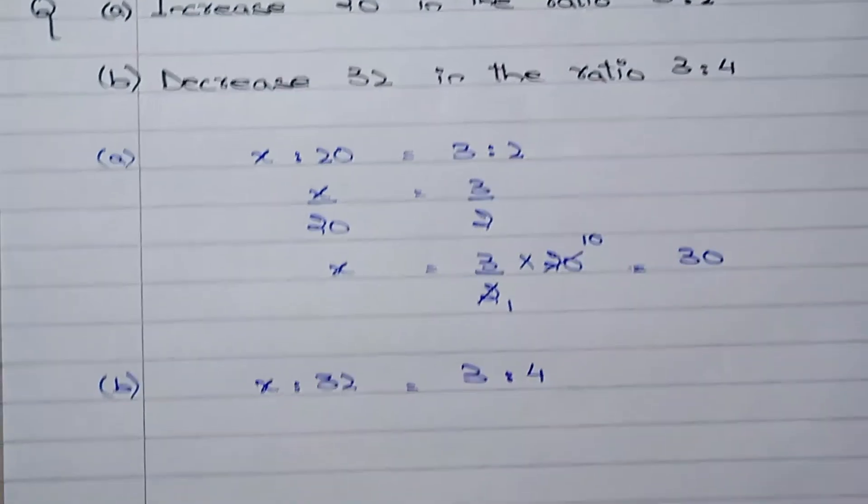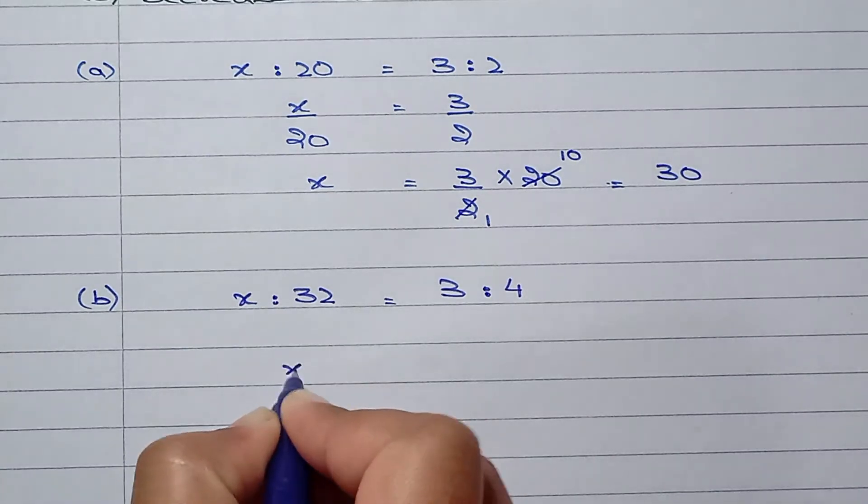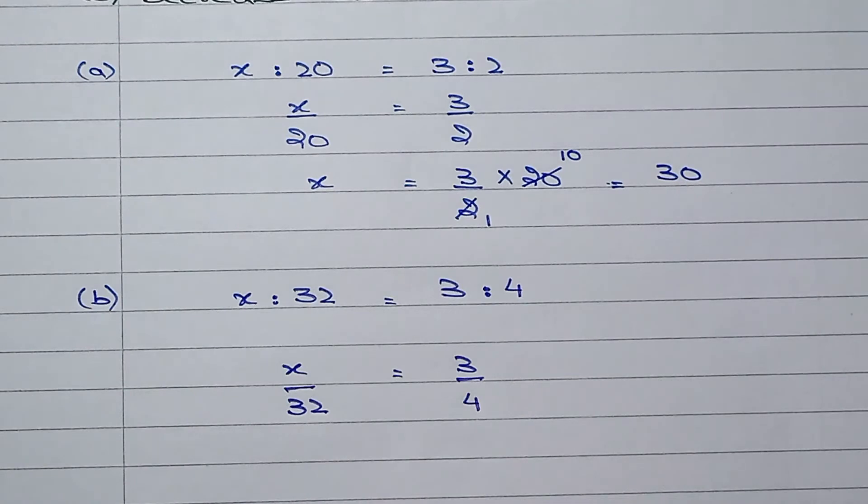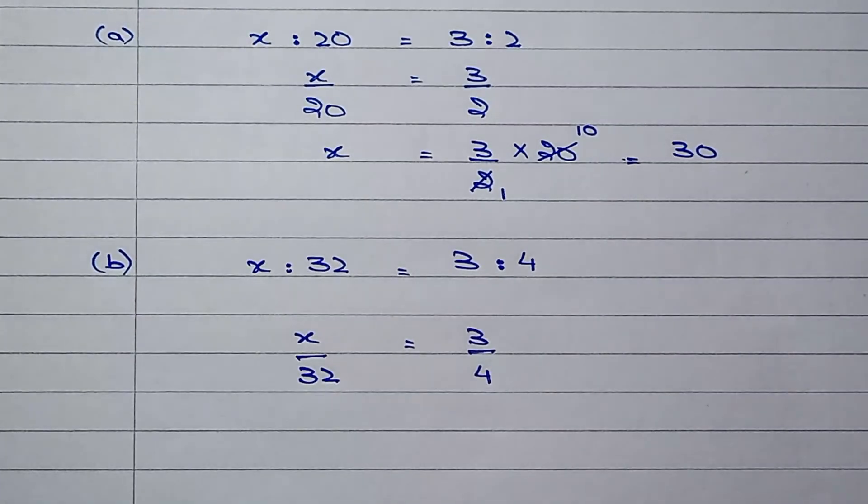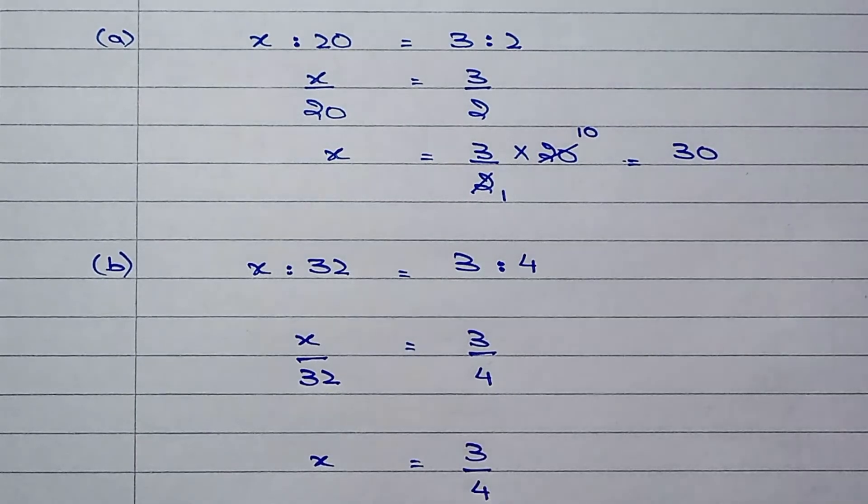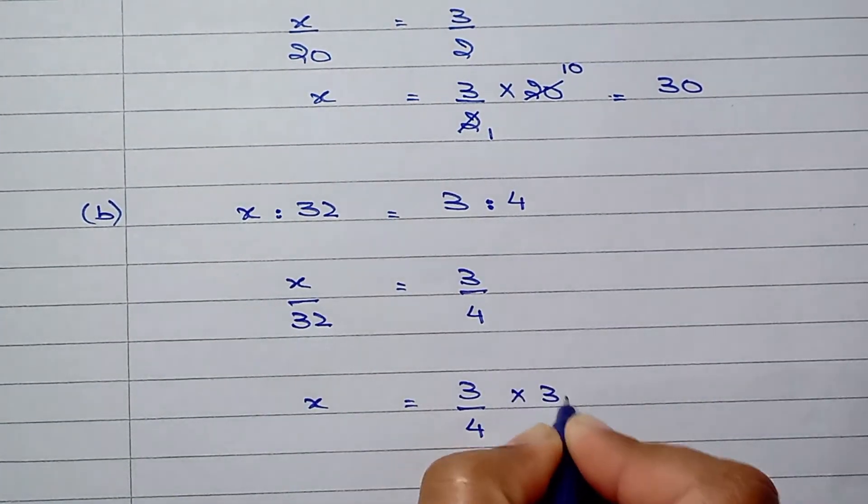Now we can convert this ratio into fraction. We can say x/32 equals 3/4, and to solve for x we can say x equals 3/4 and then multiplying 32 on both sides times 32.